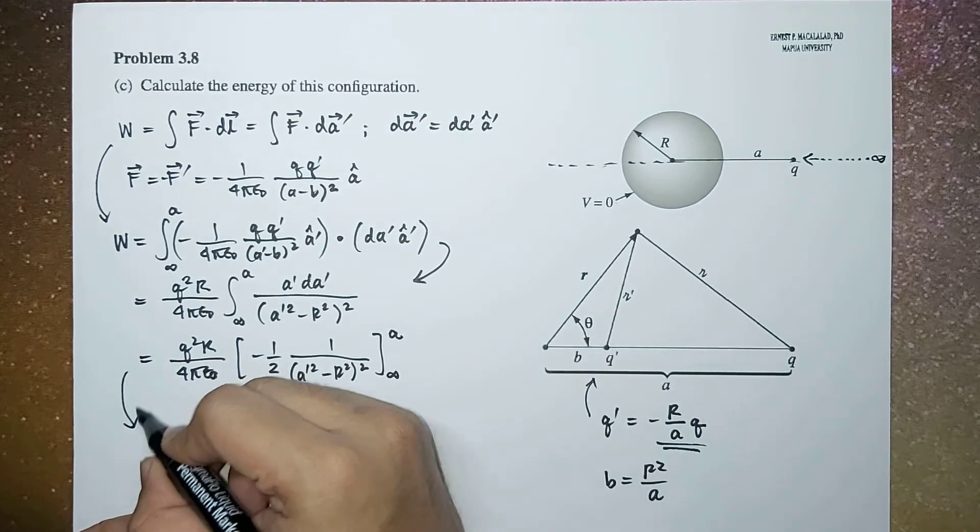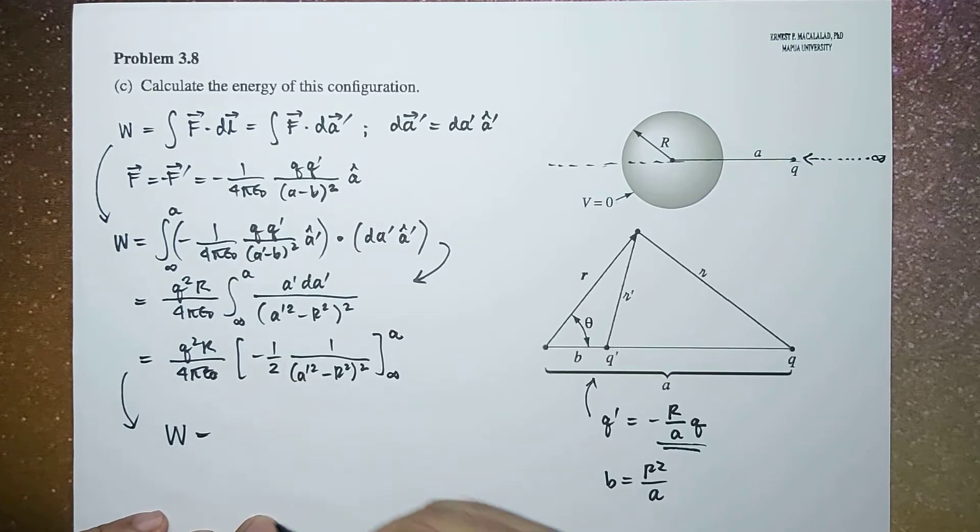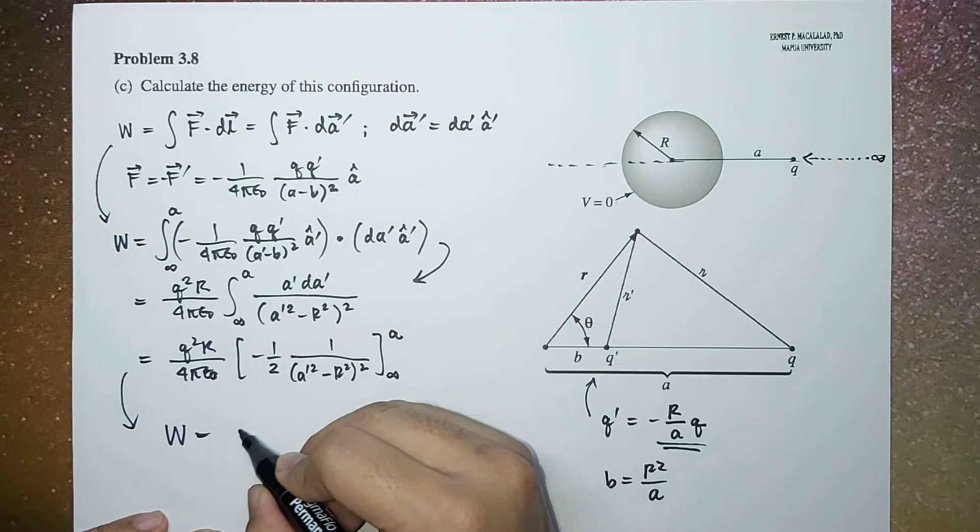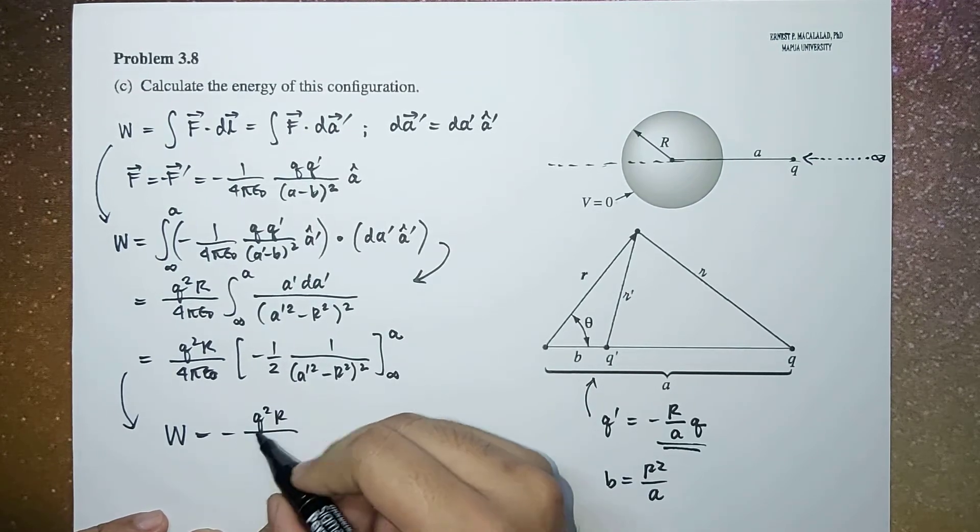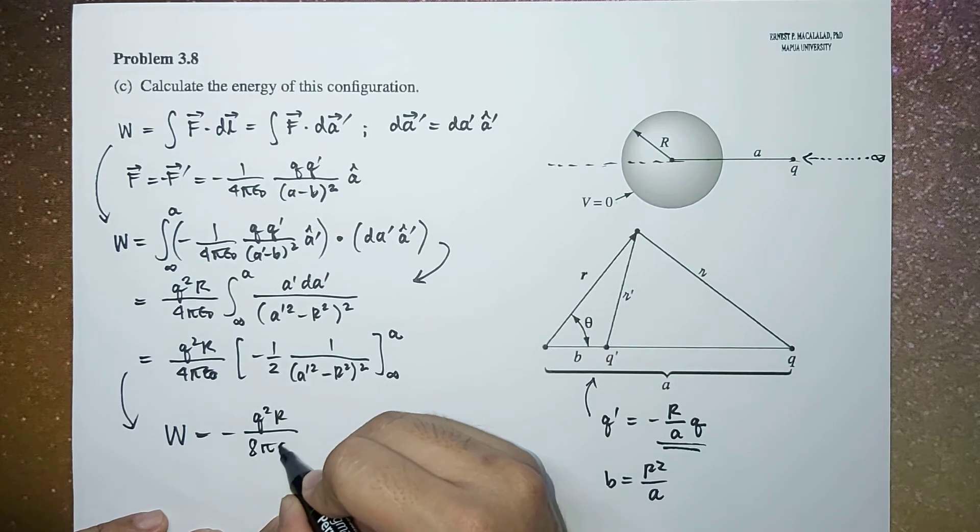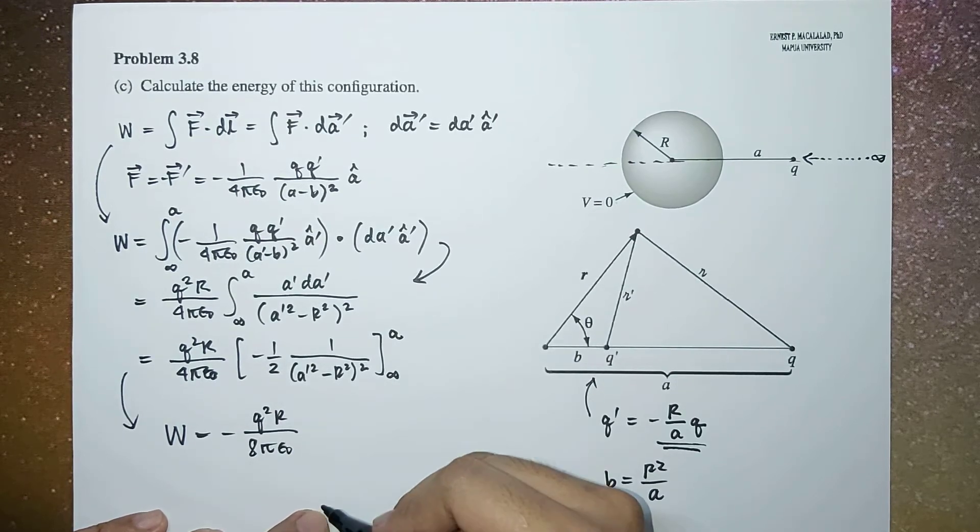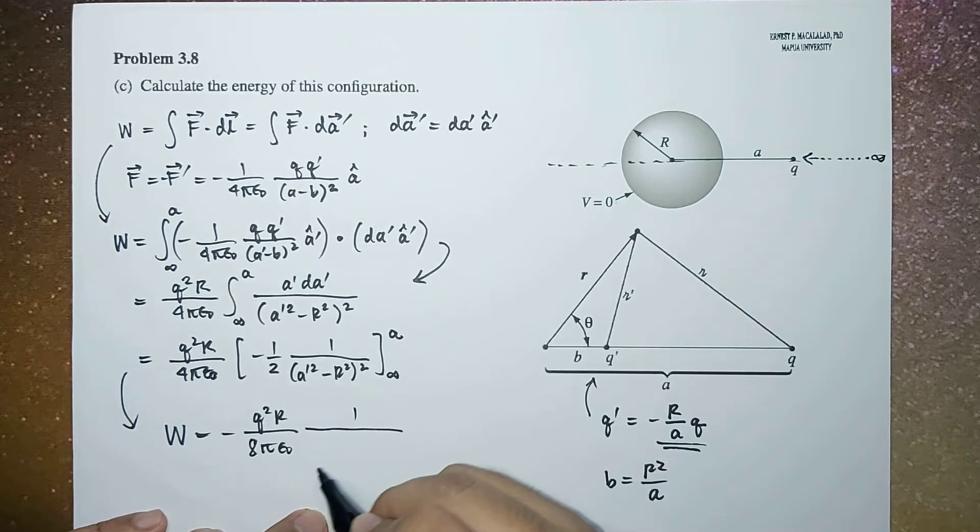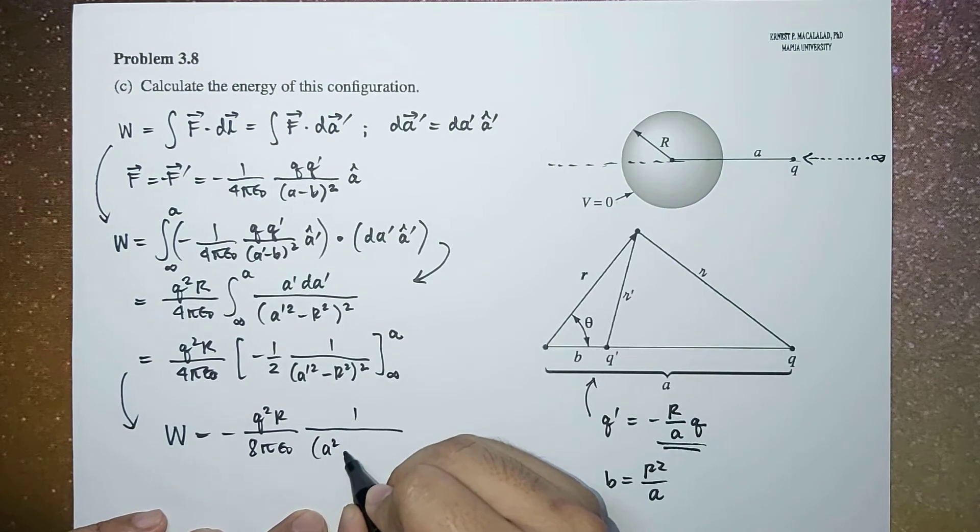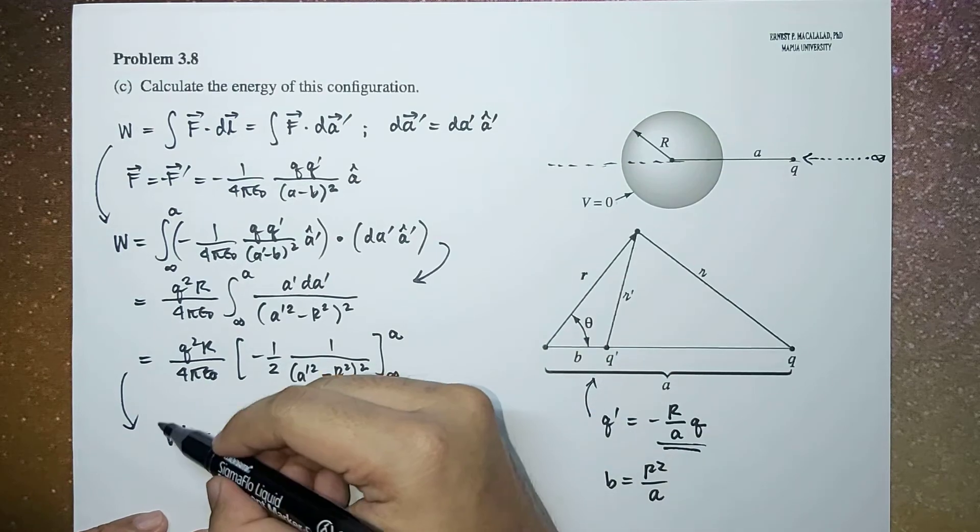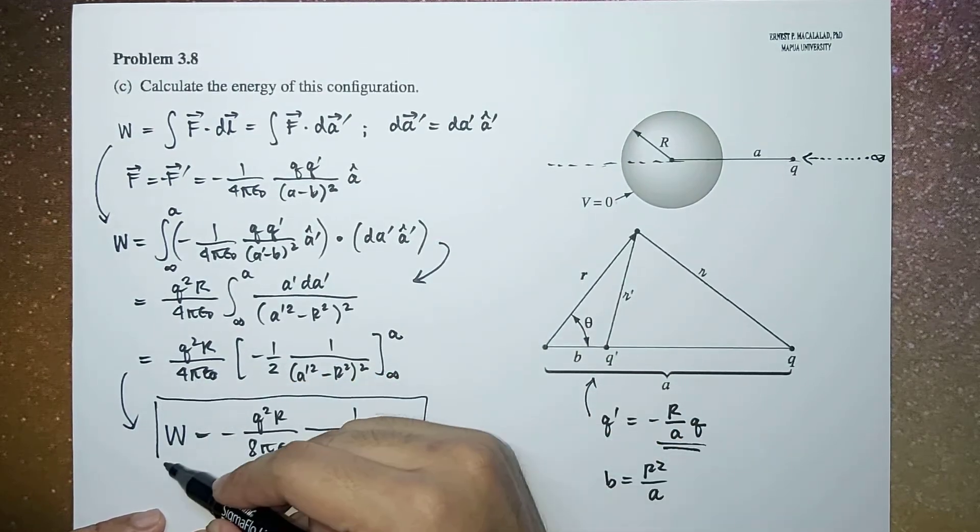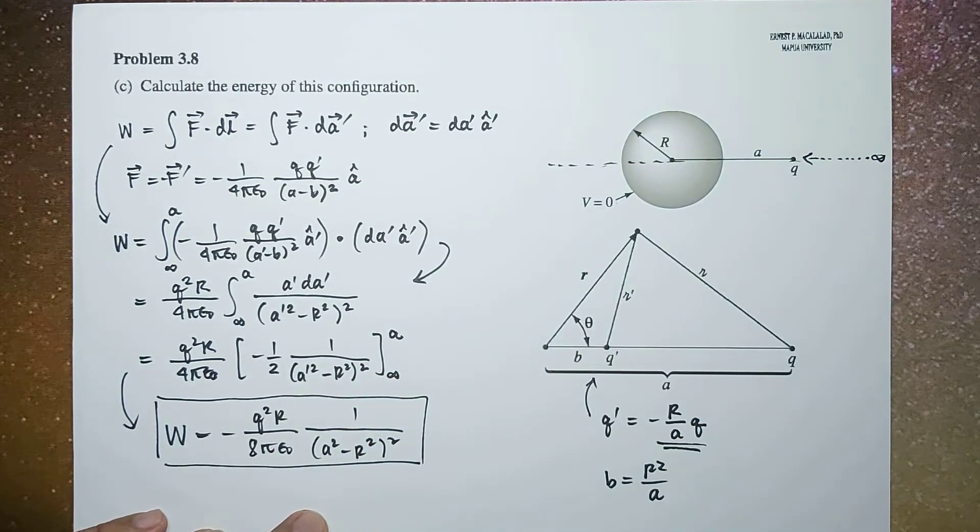Therefore the stored energy would be equal to negative q squared r over 8 pi epsilon naught times 1 over (a squared minus r squared) squared. So this is now the work done or the stored energy for this configuration.